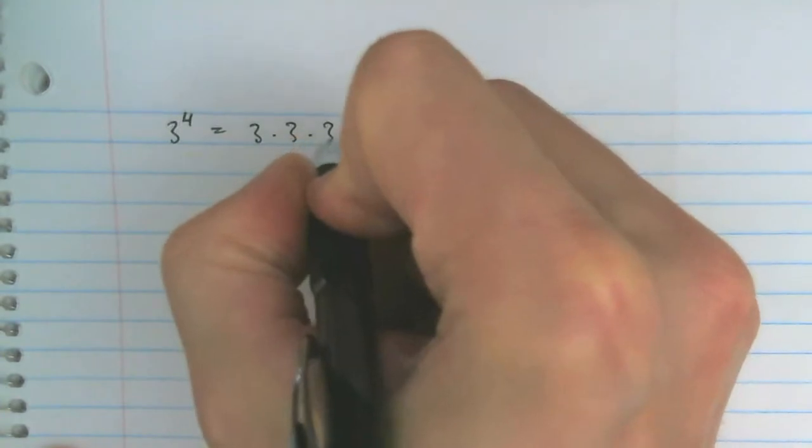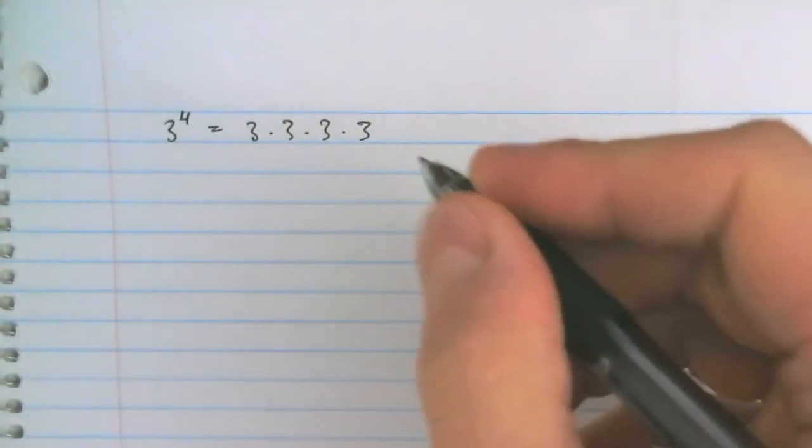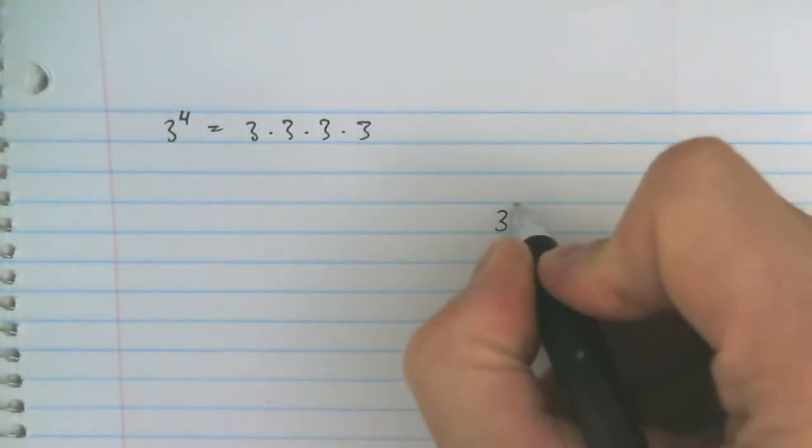Powers are repeated multiplication. When we write 3 to the power of 4, we mean 3 times 3 times 3 times 3. So let's say we have 3 to the power of 2.